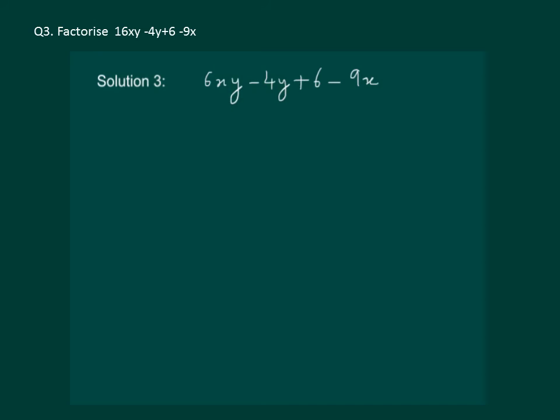So let us see whether we can use regrouping. We see that in first and second term we have y common and 2 can be taken out as common. Similarly in the third and the fourth term we can take out 3 common. So let us start with regrouping.